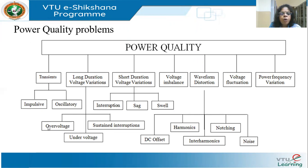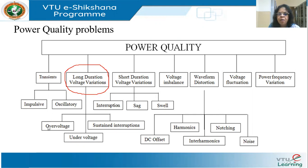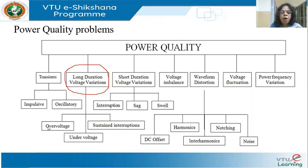Then we have long duration voltage variations. I will be talking of voltage most of the time, because power quality is equal to voltage quality — the utility provides the voltage, and the voltage at the customer premise, whether industry, residential, or commercial, should be undisturbed.